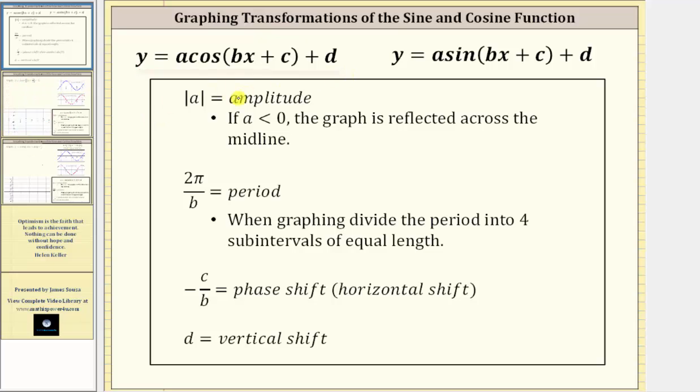The absolute value of a is equal to the amplitude. If a is less than zero or negative, the graph is reflected across the midline.